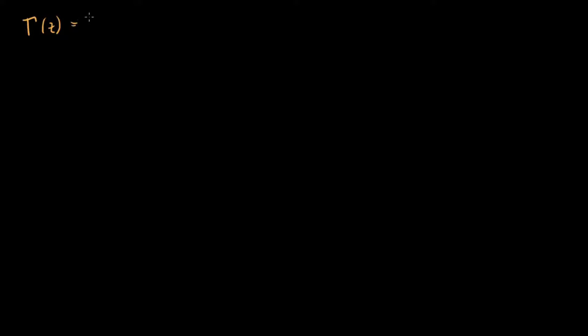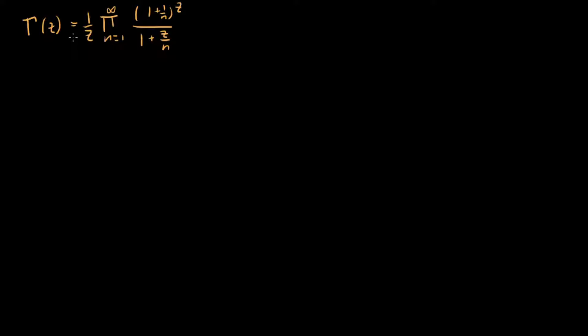In this video, I want to look at the Euler product definition of the gamma function. The Euler product definition says that gamma of z is equal to 1 over z times the infinite product from n equals 1 to infinity of 1 plus 1 over n to the z, divided by 1 plus z over n. From this formula you can instantly see that there are going to be poles — 1 over 0s — occurring at integer values of z less than or equal to 0. So just from this formula, you learn something interesting about the gamma function for negative values.